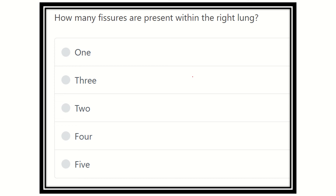Welcome to another question and answer session for examination. The question is: how many fissures are present in the right lung? This is a direct and short question. The options are one fissure, two fissures, three fissures, four fissures, or five fissures.